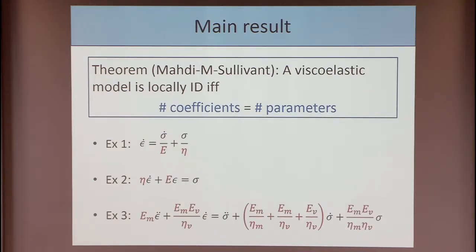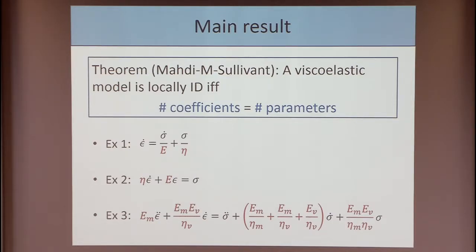Going back to our three examples — the Voigt, Maxwell, and Burgers models — all we have to do is count the number of coefficients and the number of parameters and see that they're equal. So all three of these models are at least locally identifiable. They're actually globally identifiable, and I'll talk about that later in the talk.